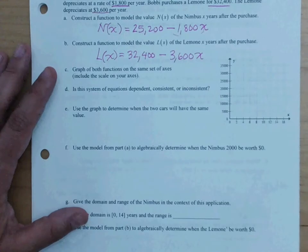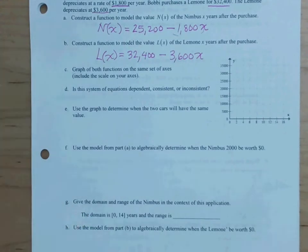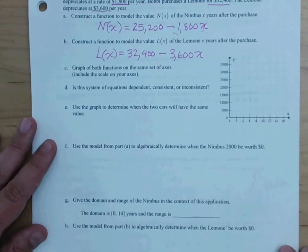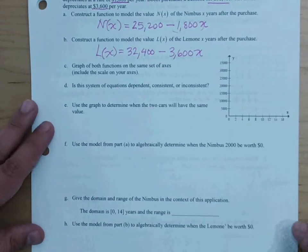Graph both functions on the same set of axes, including the scale on your axes. Is the system dependent, consistent, or inconsistent? Use the graph to determine when the two cars will have the same value.